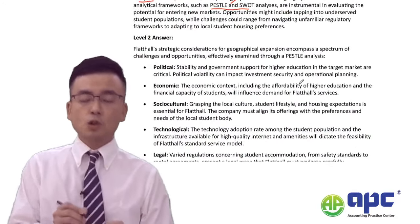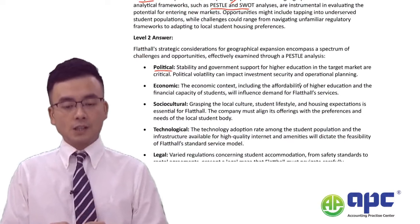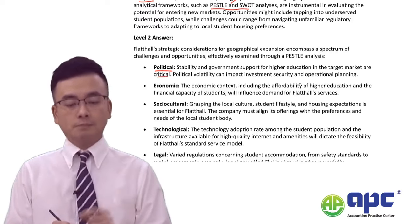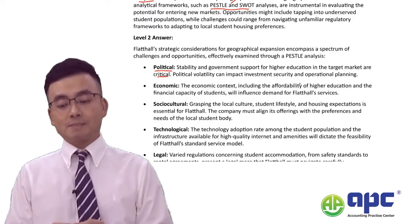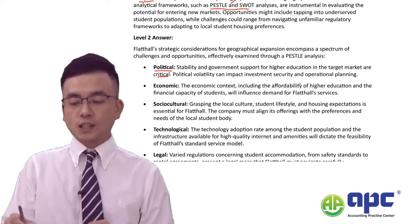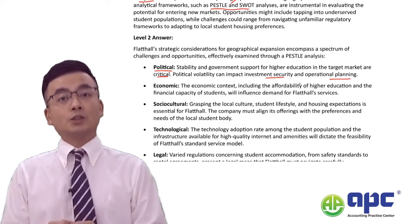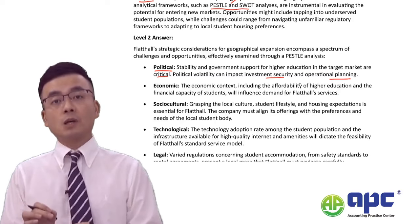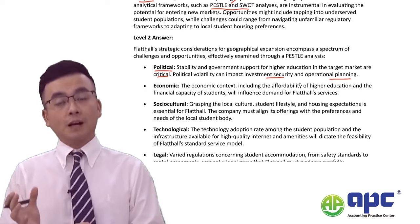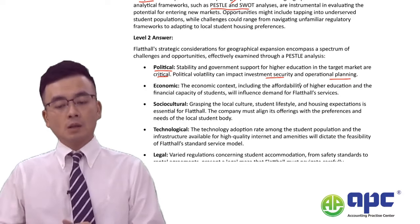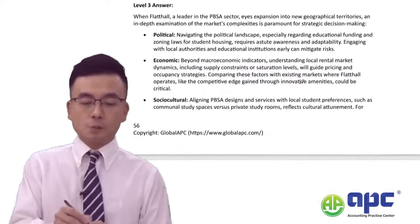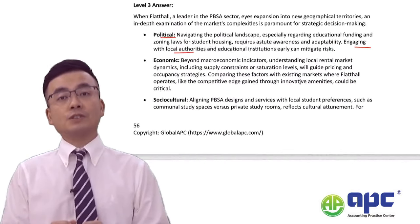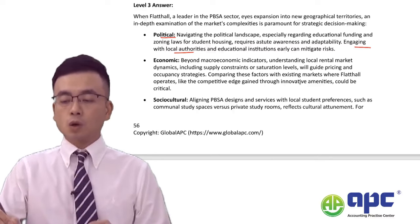For a Level 2 answer, talking about the political factor: 'Stability and government support in the target market is important. Political volatility can impact investment security and operational planning.' You're bringing implications here. However, it's not detailed enough because we're not particularly sure what FlapTor is going to do about it. So for a Level 3 answer, for the political part: 'Engaging with local authorities can reduce such risks.' You're bringing it one step further.